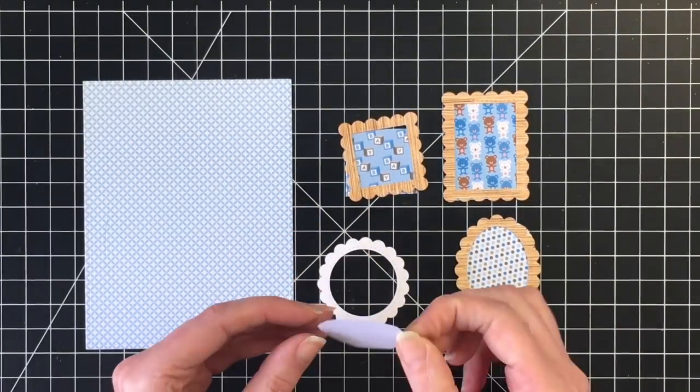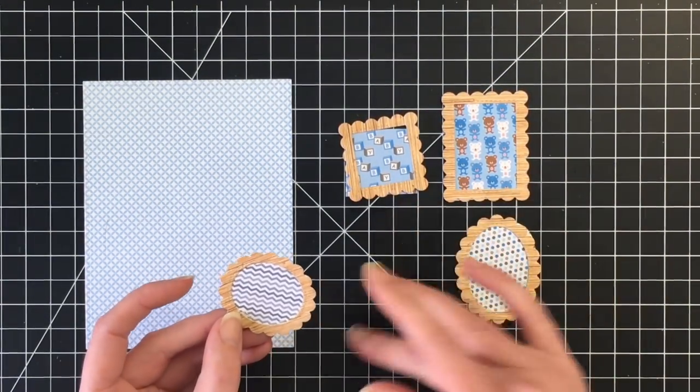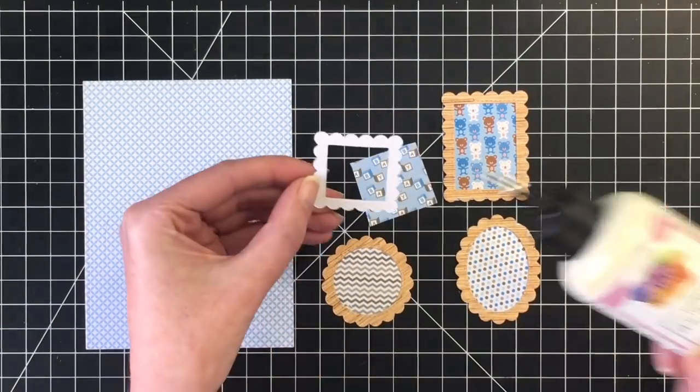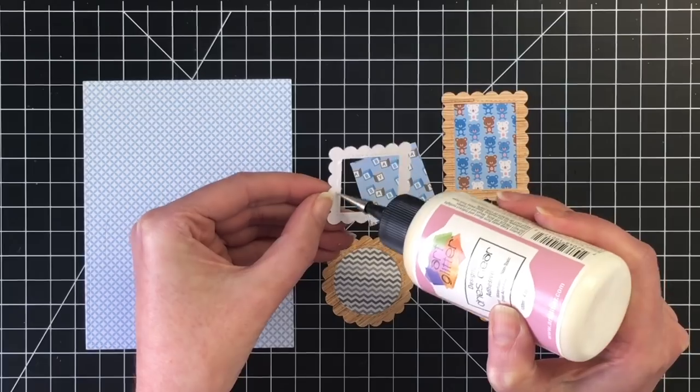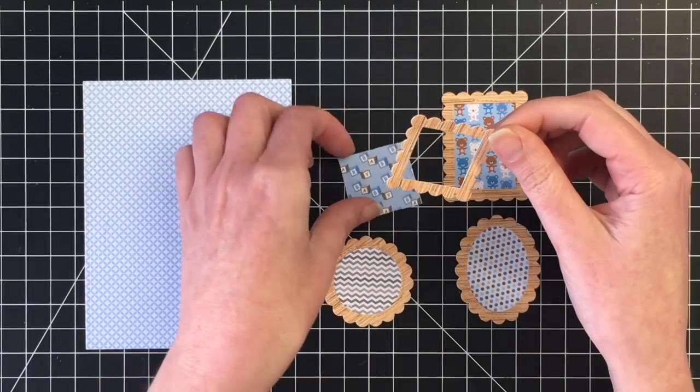I'm going to glue this on using my liquid glue. Now for this first one, I added the glue to the pattern paper and then adhered it to the picture frame. This didn't work so great. So I'm going to change that up and add the glue to the picture frame and then adhere the pattern paper to it, which worked much better.